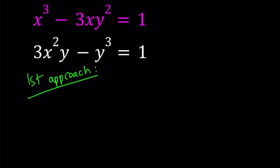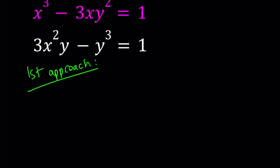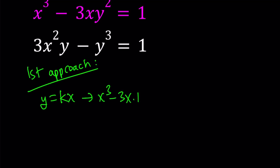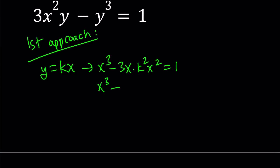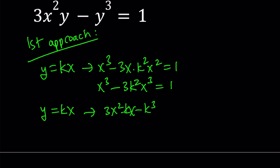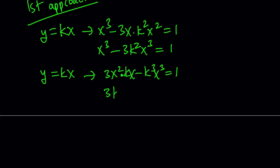For my first approach, I'm going to take advantage of the fact that this is a homogeneous system. So I'm going to replace y with kx. If you do it in the first equation, we get x cubed minus 3x times k squared x squared equals 1, which simplifies to x cubed minus 3k squared x cubed equals 1. And in the second equation, we get 3kx cubed minus k cubed x cubed equals 1.